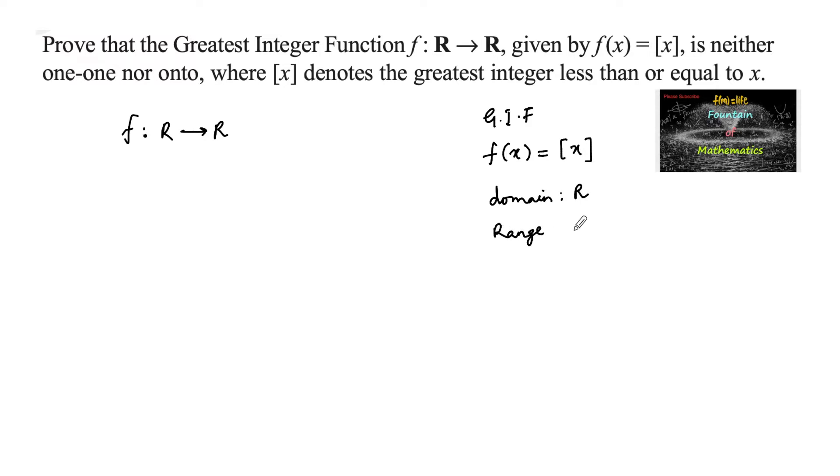For x between 0 and 1 (including 0), [x] = 0. For x between 1 and 2 (including 1), [x] = 1. For x between 2 and 3 (including 2), [x] = 2, and so on. Even for negatives, for x between -1 and 0, [x] = -1, and so on.